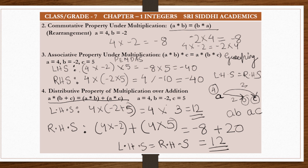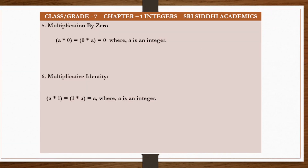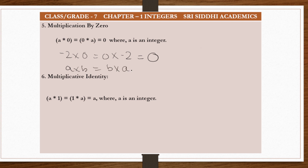Now let's understand multiplication by zero. Whenever an integer a is multiplied by zero — whether you do a × 0 or 0 × a — the answer will always be zero. Whether you do −2 × 0 or 0 × (−2), the answer is always zero. This also demonstrates commutativity: a × 0 = 0 × a = 0.